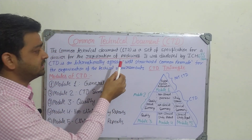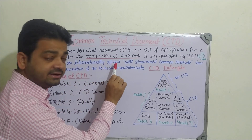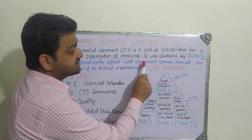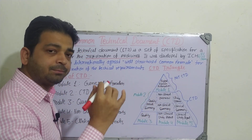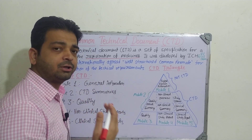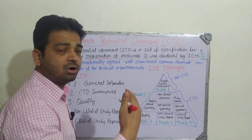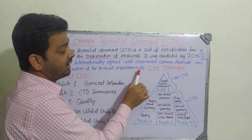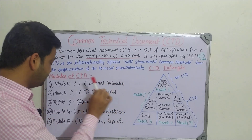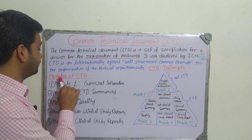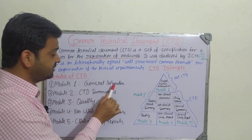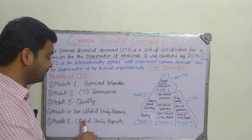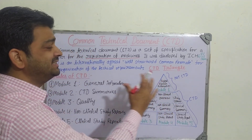CTD is an internationally agreed, well-structured common format covering the basic important points required whenever a pharmaceutical company or manufacturer goes for the registration of pharmaceuticals or medicine of any formulation. CTD has five modules: Module 1 — General Information; Module 2 — CTD Summaries; Module 3 — Quality; Module 4 — Non-Clinical Study Report; Module 5 — Clinical Study Report.